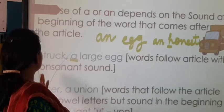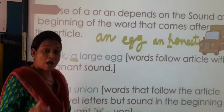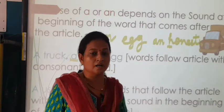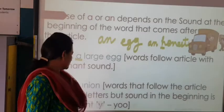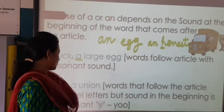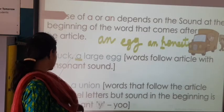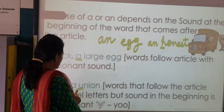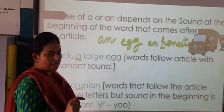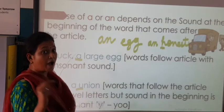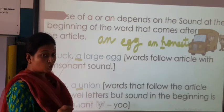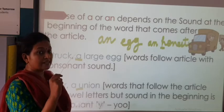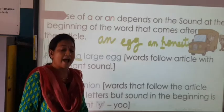Words that follow the article with a consonant sound take 'a'. Where there is a consonant sound, use 'a'. For example: 'a union' — now, this word looks as if it starts with a vowel, but the sound is coming as 'yoo', which is a consonant sound. So when you have that 'yoo' sound, you will be writing 'a', not 'an'.